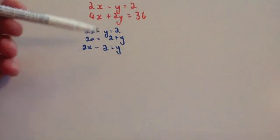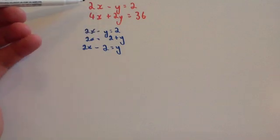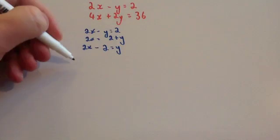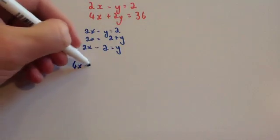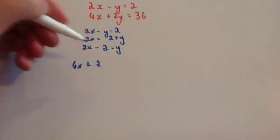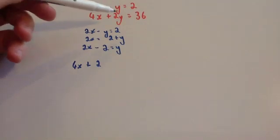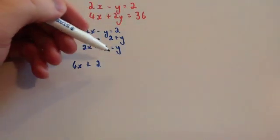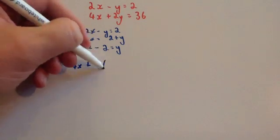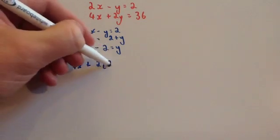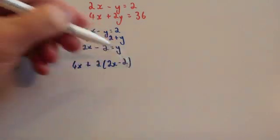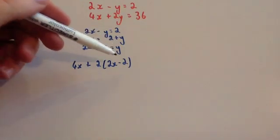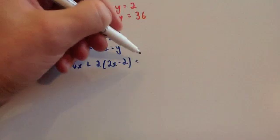We've made y the subject of the top equation, so now we're going to substitute it into the second one. We have 4x plus 2, and normally you'd write y, but we know that y is 2x minus 2. So instead of y, we write 2x minus 2 — that's the substitution — and that equals 36.